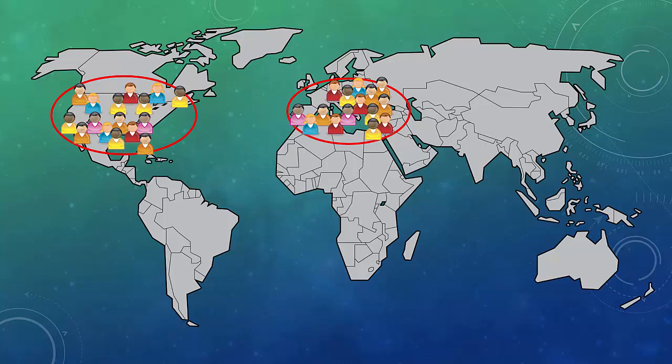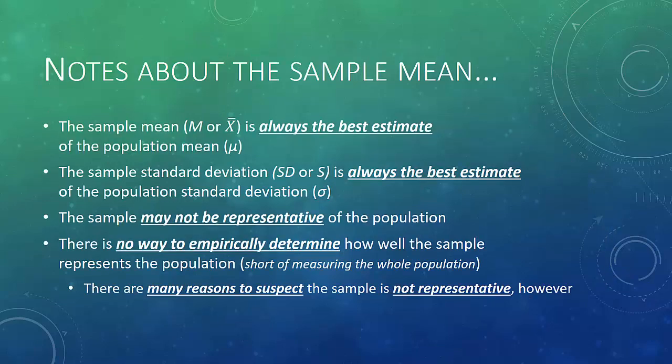This brings up some interesting points about the sample mean. The sample mean is always the best estimate we have of the population mean. Likewise, the sample standard deviation is always the best estimate we can come up with for the population standard deviation. These are not values inherently known by anyone, so the sample is our best guess.